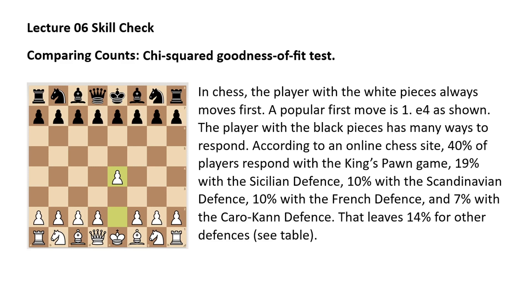Here we're going to go through an example where we're conducting a chi-squared goodness-of-fit test. The basic idea is we have a single categorical variable with several categories, we have a population distribution across those categories, and then we have a sample which we want to test to see whether that sample is consistent with the population distribution.